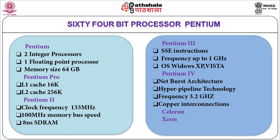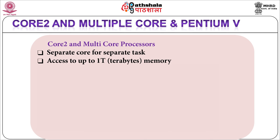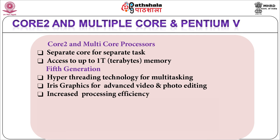Core 2 and multi-core processors are advanced processors that can access up to 1 TB of memory and support 64-bit arithmetic operations. Processing efficiency is increased as each core executes a separate task. Fifth generation processors are manufactured with hyper-threading technology for efficient multitasking, and Iris graphics is used for advanced video and photo editing. Examples include Intel Core i7-5550 with 4 MB cache, 2 cores and 4 threads at 2 GHz, and i7-5557 operating at 3.1 GHz.